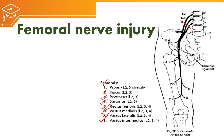If there is injury above the iliac crest, all the motor functions of the femoral nerve will be lost. If the injury is below the iliac crest, then psoas major may be spared. If the injury is at the level of the hip joint, psoas major and iliacus may be spared whereas other muscles may be involved. If it is a shaft of femur fracture which has injured the femoral nerve, then only the quadriceps will be impaired.